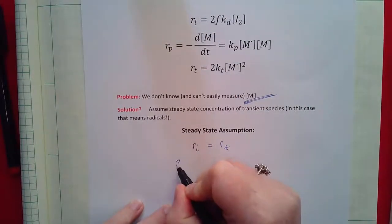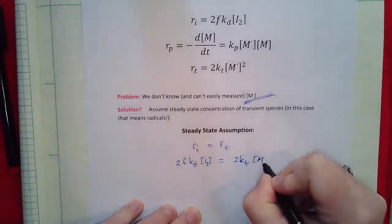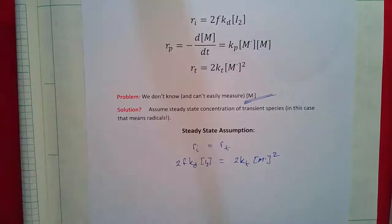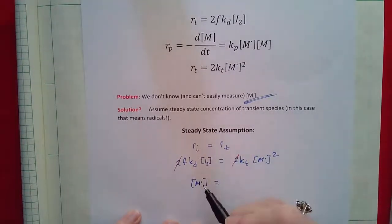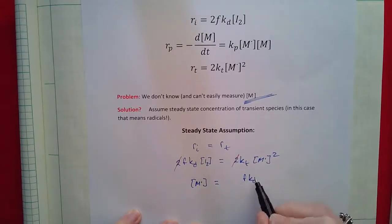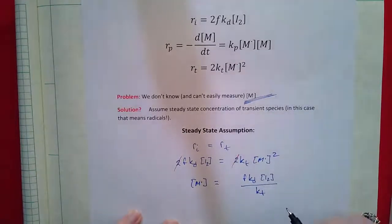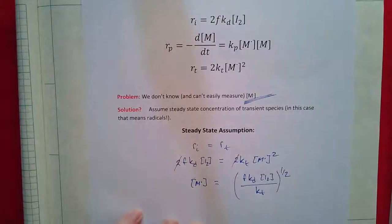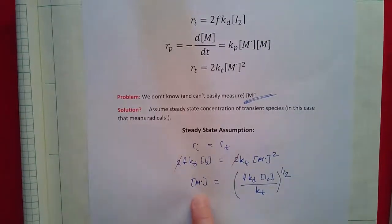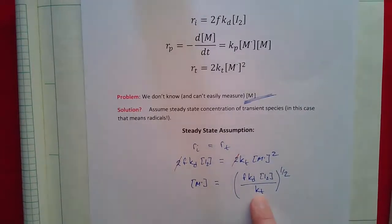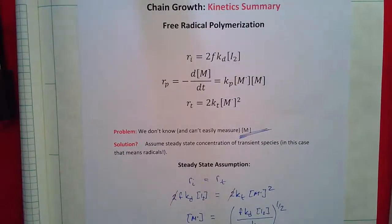Applying the steady state assumption: R_I = R_T, so 2·F·K_D·[I] = 2·K_T·[M·]². The twos cancel, and solving for the free radical concentration gives: [M·] = (F·K_D·[I] / K_T)^(1/2). That is our steady state expression for the free radical concentration. Now I can take this and plug it in for the rate of propagation, the rate of termination, or wherever I need to eliminate the concentration of active species.